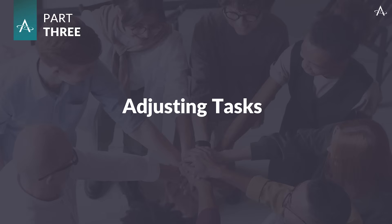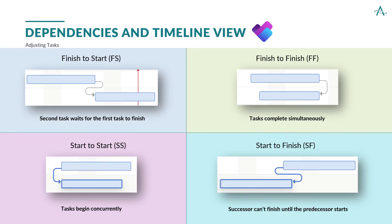Adjusting tasks in Planner Premium isn't just about moving a due date — it's about adapting to change in a structured way. Planner Premium gives you the flexibility to update assignments, shift timelines, modify dependencies, and track the impact in real time. Dependencies control when tasks start or finish based on other tasks. Finish to start is the most common, but Planner Premium allows the use of all four dependency types, giving clarity on how the timeline is structured and how changes can ripple across the project.